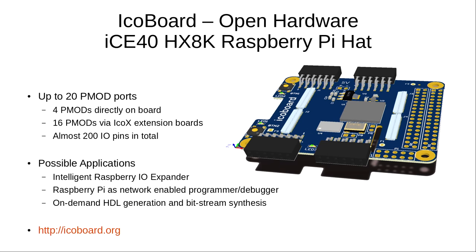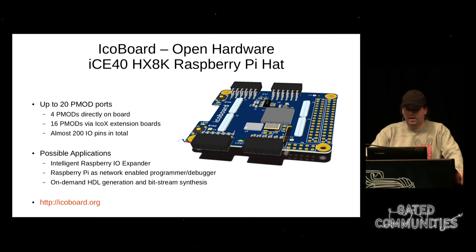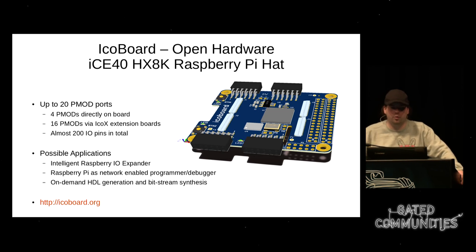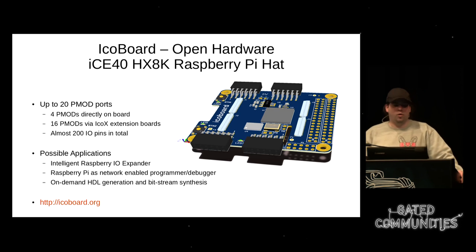In the lower left corner you see the iCoBoard, which is a project I'm involved with and I'll use for the demo. The iCoBoard is a Raspberry Pi HAT featuring the 8K FPGA. It supports up to 20 PMOD ports when using iCOX extension boards connected to flat flex connectors, giving you almost 200 I/O pins on the Raspberry Pi in total. This can be useful even if you're not really interested in an open source FPGA toolchain. Applications include an intelligent Raspberry Pi I/O expander, using the Raspberry Pi as a network-enabled programmer and debugger, and you can even create HDL code on the fly on the Raspberry Pi, synthesize it there, and program it into the FPGA without any external workstation.